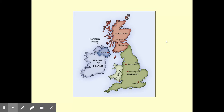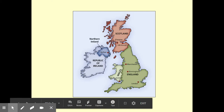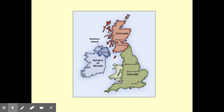First of all, it's important to point out the difference between English Constitutionalism and British Constitutionalism. We use them often interchangeably, but England specifically refers to where the English live, which is only part of the British Isles, as opposed to the other parts which include Scotland, Wales, and Northern Ireland — all today part of the United Kingdom. The other part would be the Republic of Ireland, which is a separate country.